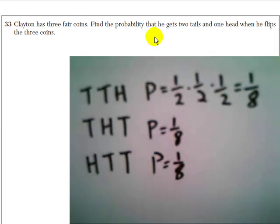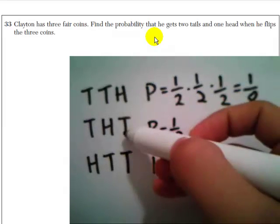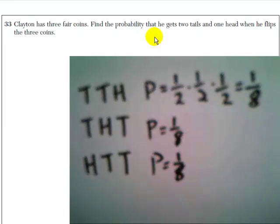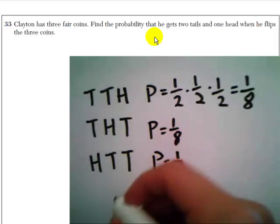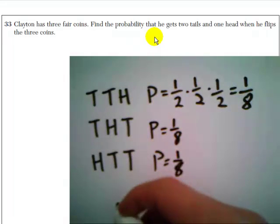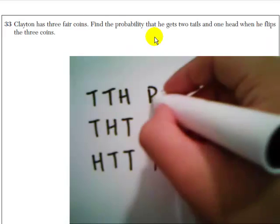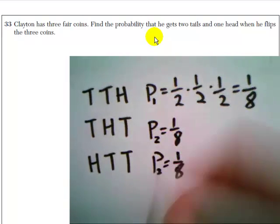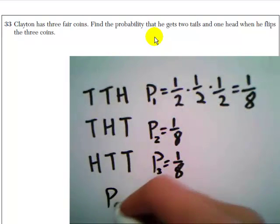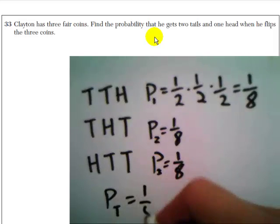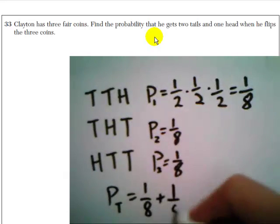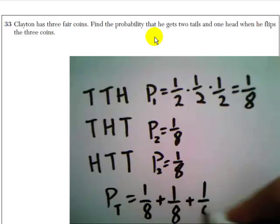So what we want to figure out is what's the probability of this happening, or this happening, or this happening. So the probability altogether, let's call this one, two, three. So the total probability is going to be one eighth plus one eighth plus one eighth equals three eighths.